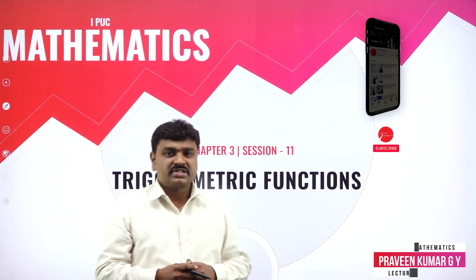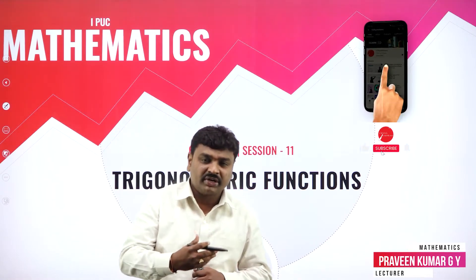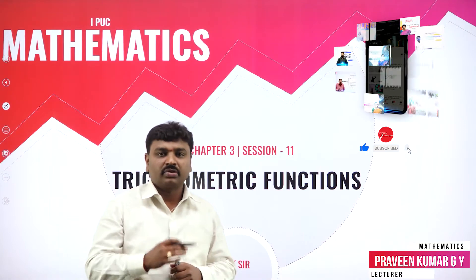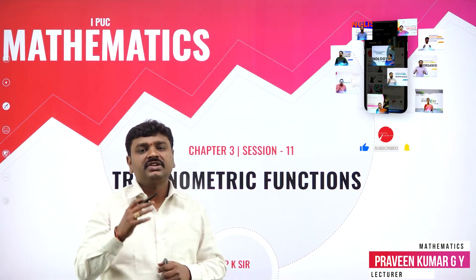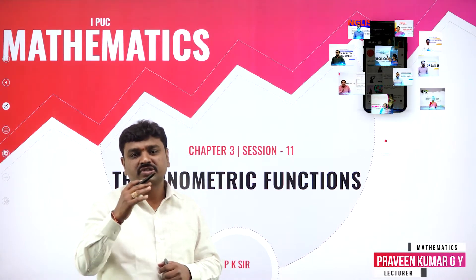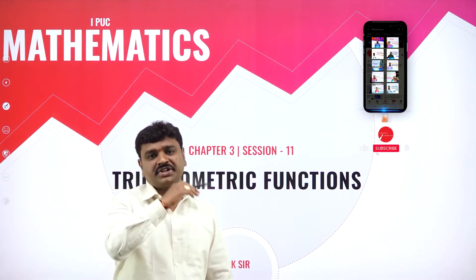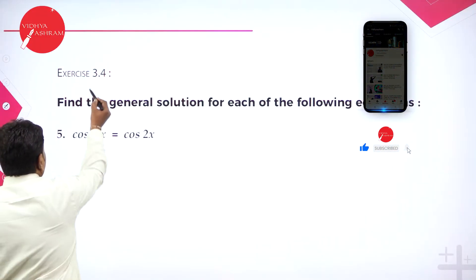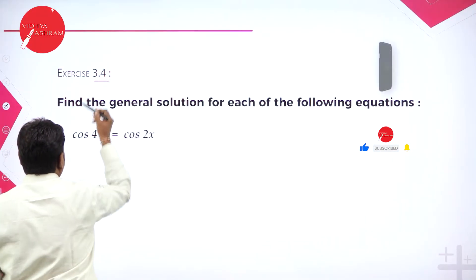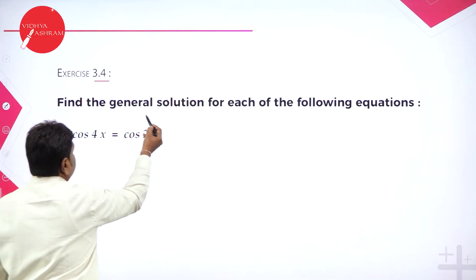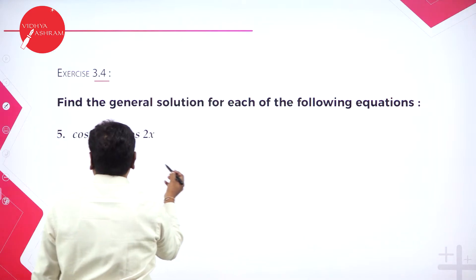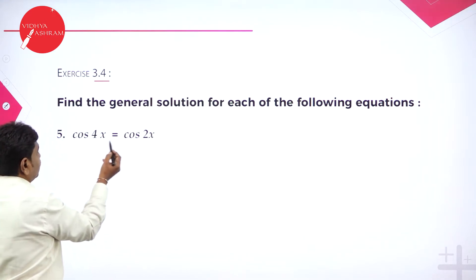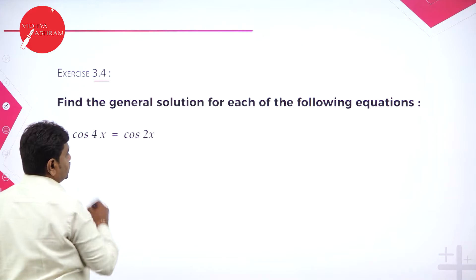Welcome to the session, dear students. Now I will go ahead with problems of Exercise 3.4, that is finding general solutions of a trigonometric equation. In Exercise 3.4, find the general solution for each of the following. Question number 5: they gave cos 4x is equal to cos 2x.